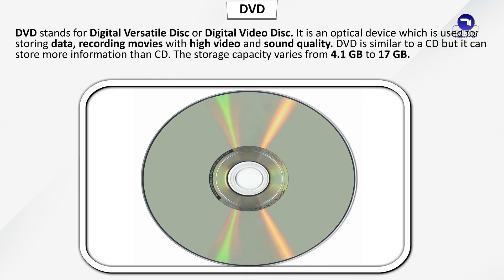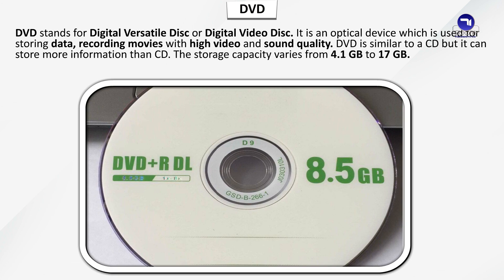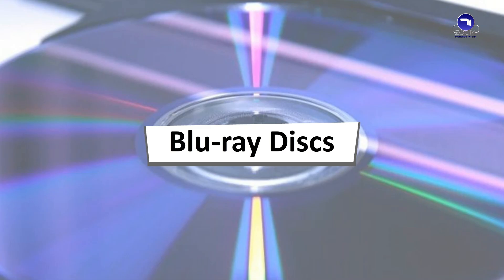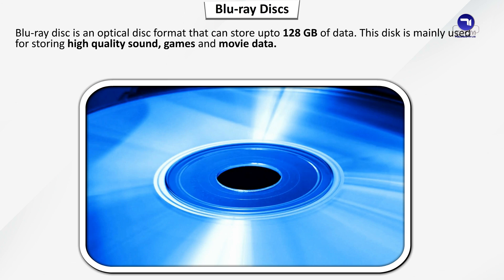DVD stands for Digital Versatile Disc or Digital Video Disc. It is an optical device used for storing data and recording movies with high video and sound quality. DVD is similar to a CD but can store more information. The storage capacity varies from 4.1 GB to 17 GB. Blu-ray Disc is an optical disk format that can store up to 128 GB of data. It is mainly used for storing high quality sound, games and movie data.